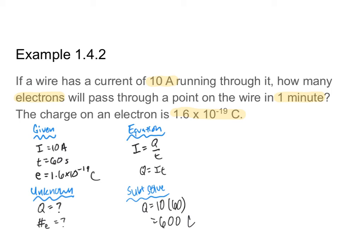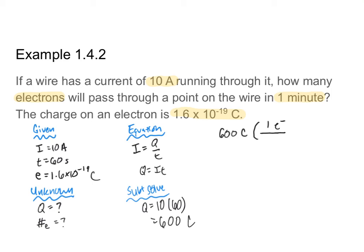How do I go from 600 coulombs to a number of electrons? Let's do some dimensional analysis. I have 600 coulombs of charge, and one electron has 1.6 times 10 to the negative 19th coulombs of charge on it. So I divide 600 coulombs by 1.6 times 10 to the negative 19th coulombs to find the number of electrons. That gives me 3.75 times 10 to the 21st electrons traveling through that point in one minute.